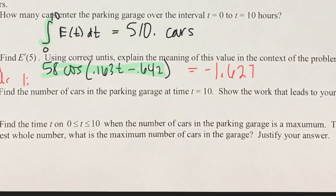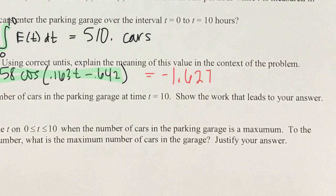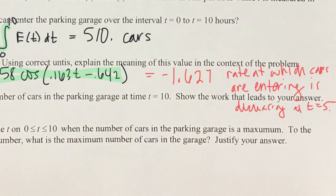What does a negative derivative mean in context? The amount of cars entering is decreasing at time t=5. The rate at which cars are entering the garage is decreasing — cars are still going in, just not as fast as at a different time.